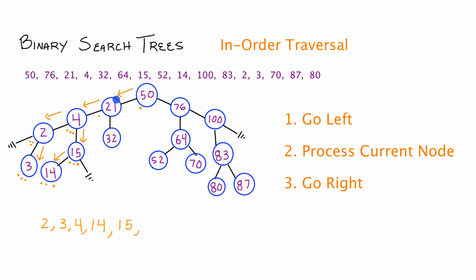Node 4 has completed all three steps, so we fall back to node 21. Node 21 has completed the first step, so we go to step two — process the current node. We write 21 to show we've processed it. Then the third step for 21 is go right. Looking at node 32, we attempt to go left but can't because 32 does not have a left child. We process the current node and write 32. Then step three — we attempt to go right but can't. We've completed steps one, two, and three on node 32, so we fall back.